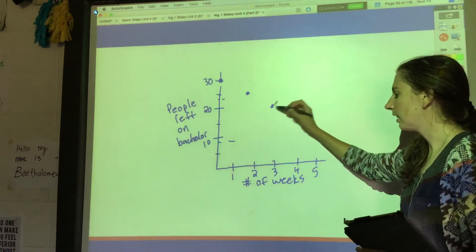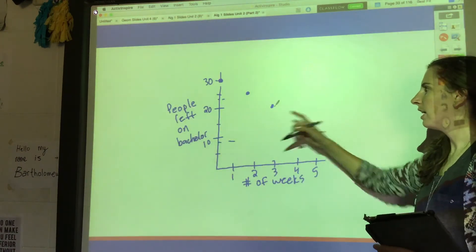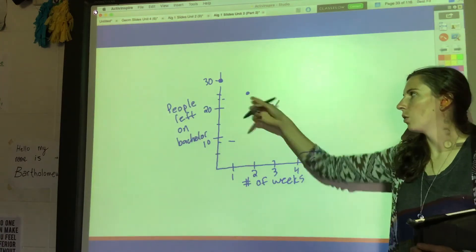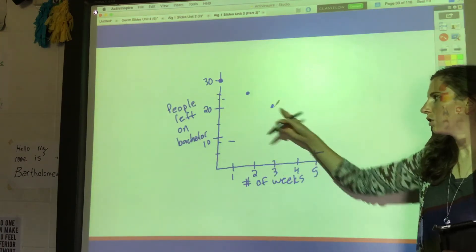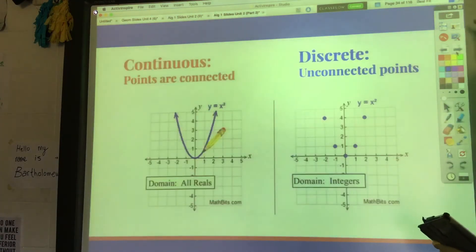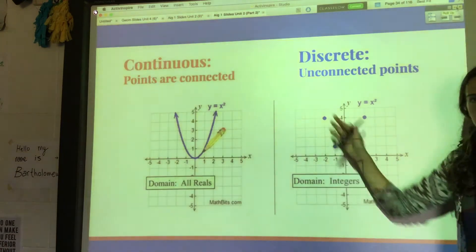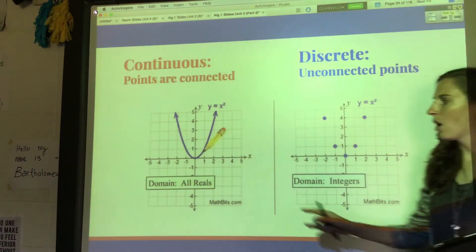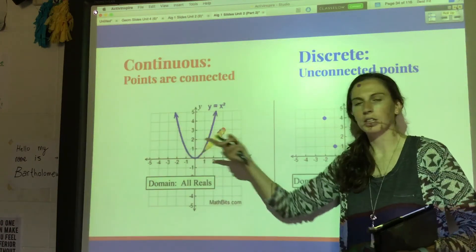and then this many people left on week two, and then exactly 20 people left on week three. See how I'm going with just whole numbers and I'm not connecting the dots because I don't want the intermediate values, I just want each week. Okay, so what we're getting at is this: sometimes you want a continuous function, which means all the points are connected - you connect the dots.